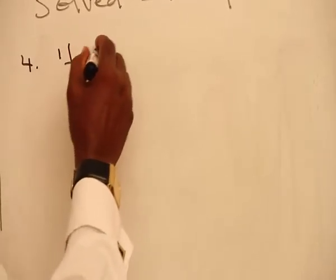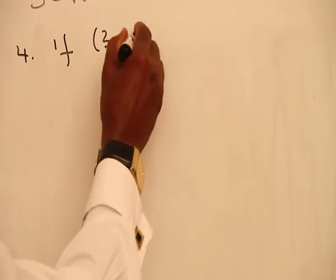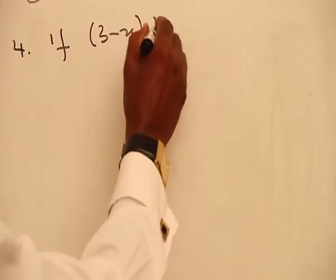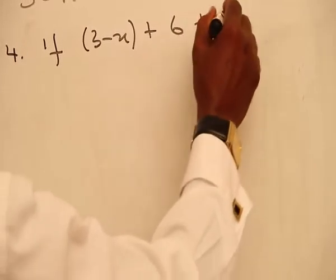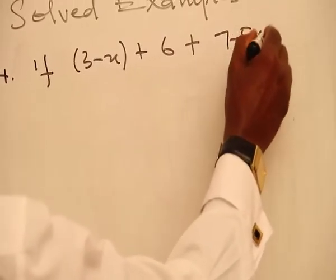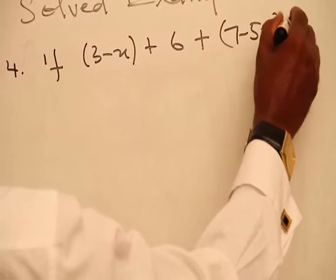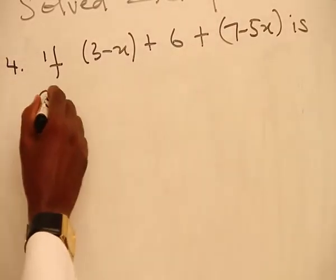So if 3 minus S, plus 6, plus 7 minus 5S is a GP,